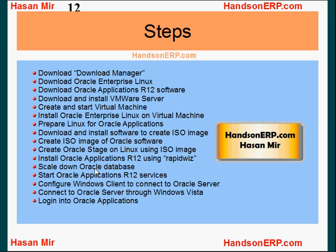Once we have Oracle up and running, it's very important to scale Oracle down. Oracle does not recommend that you run it on 2 gigabytes — it recommends at least 4 gigabytes or more. But if you use this trick to scale down the Oracle database, you can easily run the whole software on 2 gigabytes. When you install Oracle it assumes it has a lot of resources available, but when you scale it down it can live properly within the limited resources.